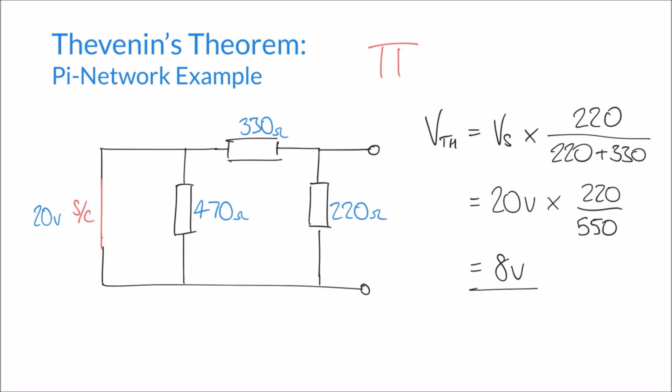And if we take the maxim that current always takes the path of least resistance, the same is true in this case. There's no sense in going through a 470 ohm resistor when it's been shorted out by this short circuit loop here. And so actually, even in the Thevenin resistance, the 470 ohm resistor in this case is something that we can ignore.